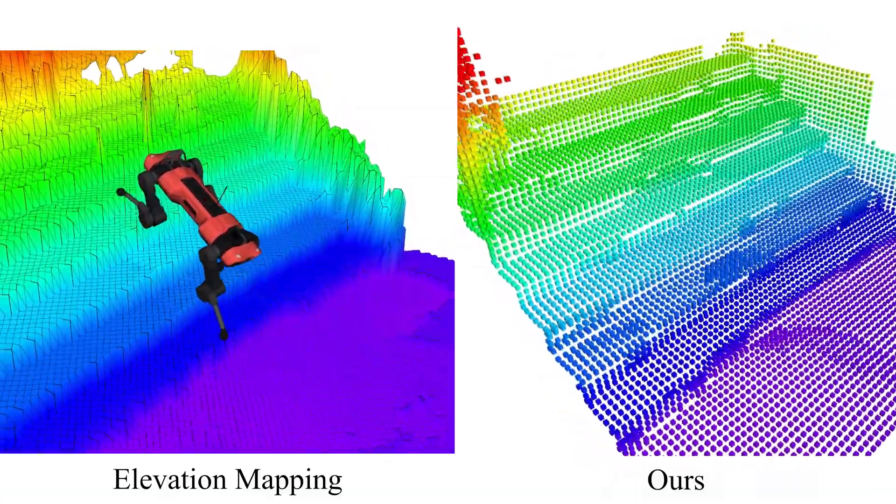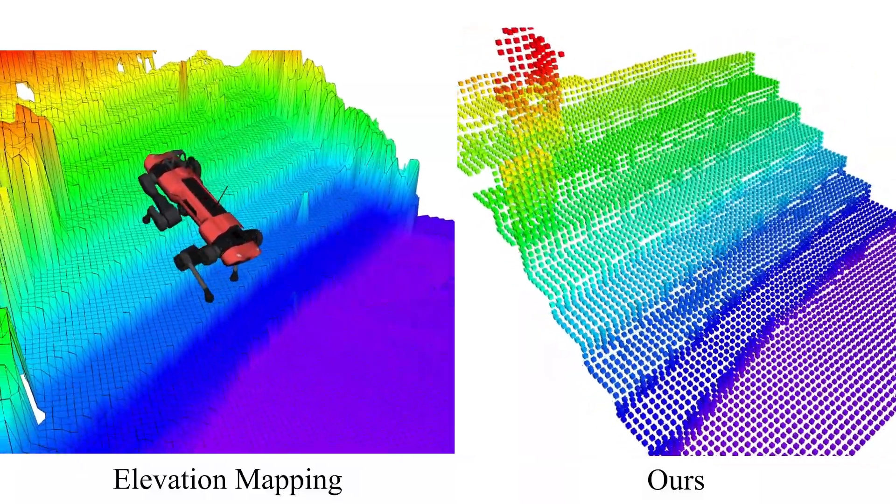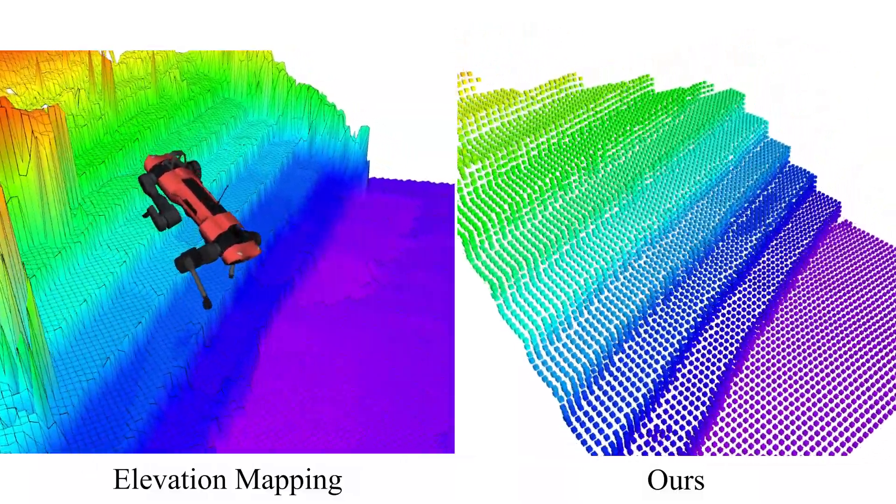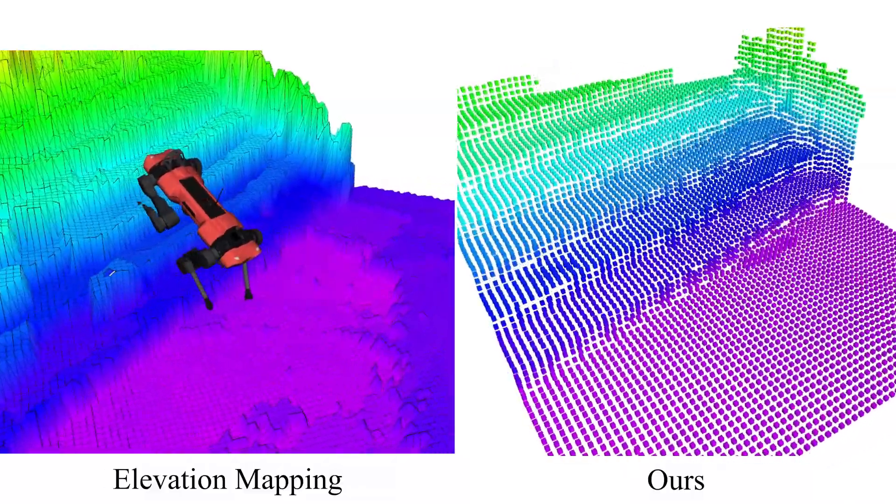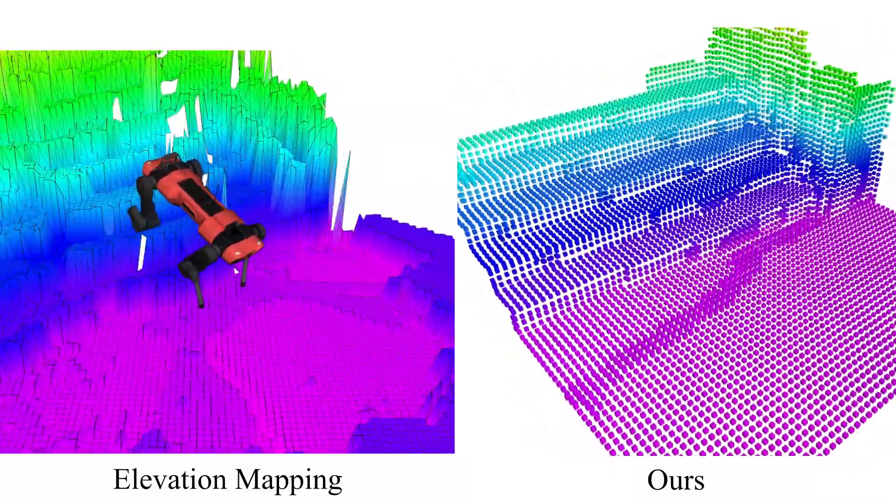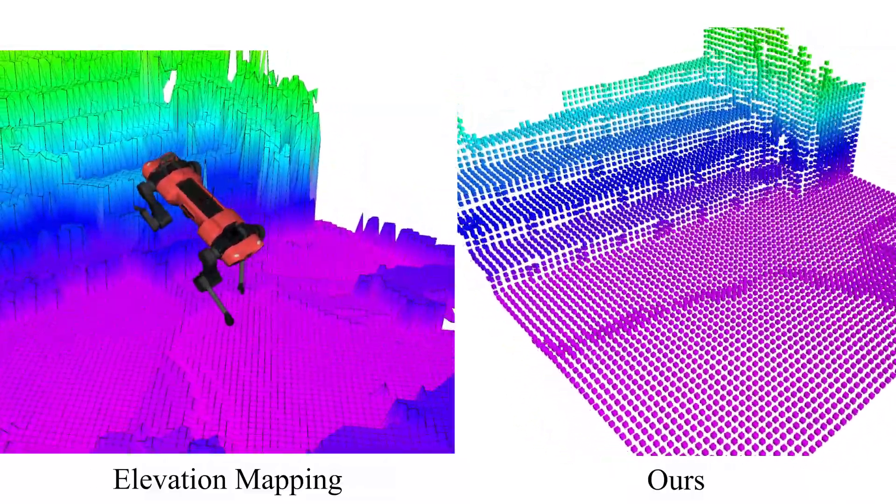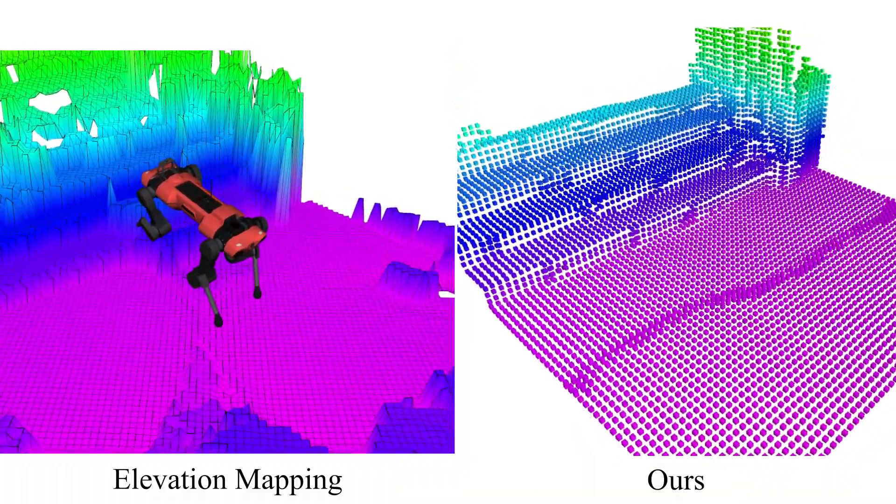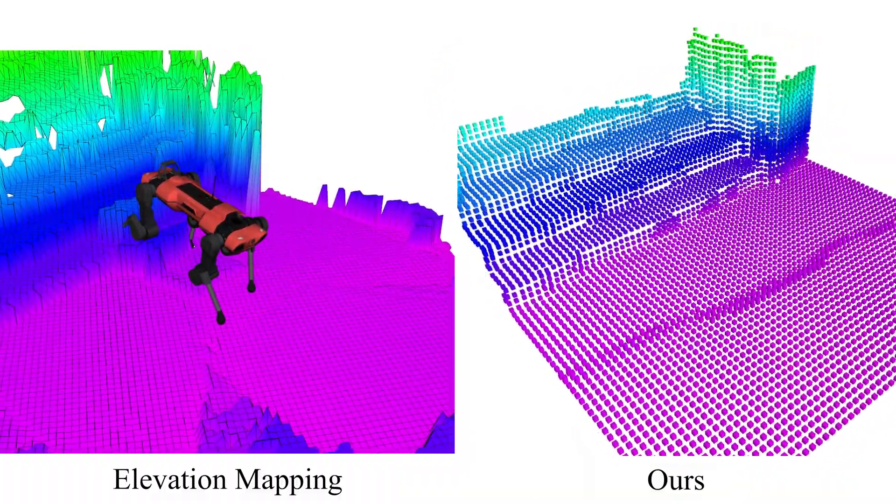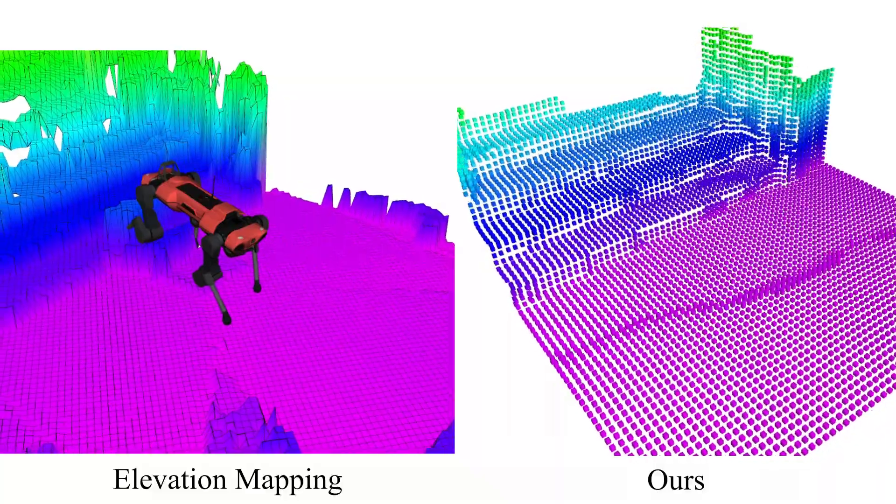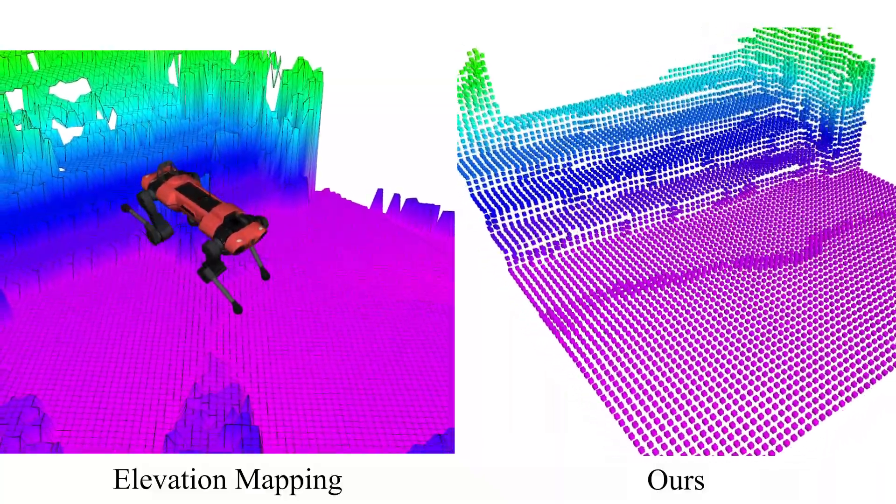In this outdoors experiment on steep stairs, the policy uses the height information from elevation mapping. Since the state estimator drifts, the map becomes unclean and the robot's motion is not smooth as a result. Note that our approach is able to detect this discrepancy between the measurements in the map and immediately aligns them.